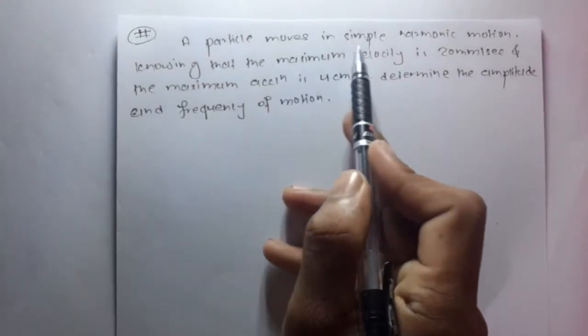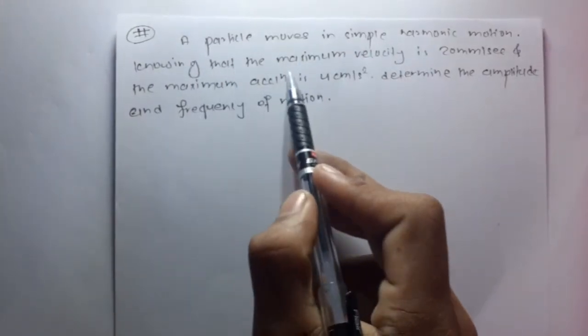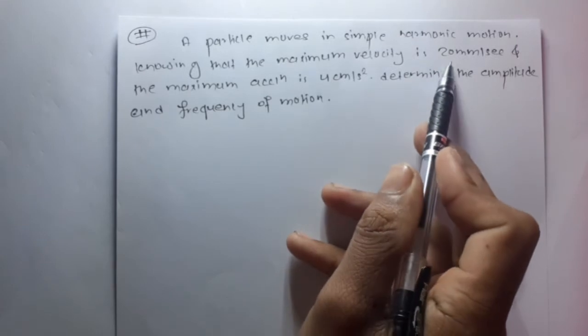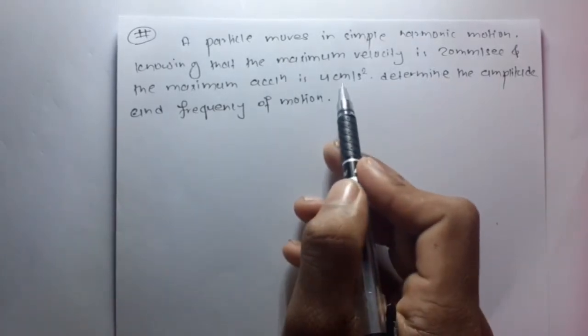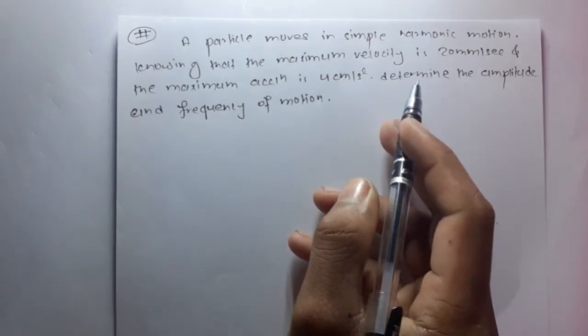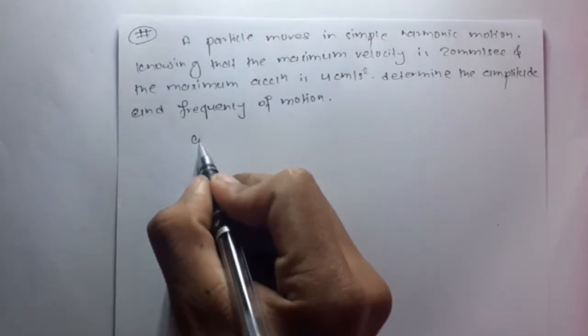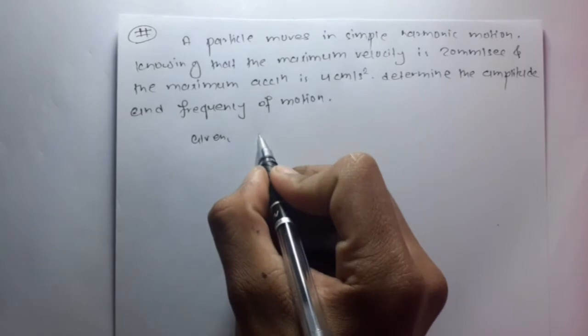The question is: A particle moves in simple harmonic motion. The maximum velocity is 20 mm per second and the maximum acceleration is 40 cm per second squared. Determine the amplitude and frequency of motion. Given: V